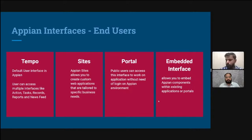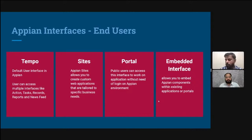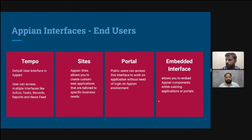The fourth is Embedded Interface. In Appian, if you create a report or action and want to show it on an external company portal — like an HTML site built on a different technology — you can do that by putting a simple command. You can access those Appian interfaces outside of Appian as well. However, this requires Single Sign-On. If your HTML page and Appian both have SSO configured, it will work.